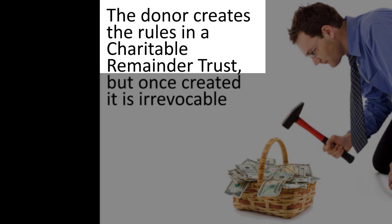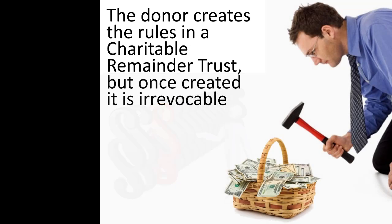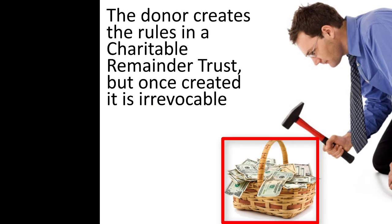The donor creates the rules in a charitable remainder trust, so long as those rules fit within the general guidelines for charitable remainder trusts established by the Internal Revenue Code. This enormous flexibility, however, ends after the trust is created. A charitable remainder trust is an irrevocable trust. Once the rules are created, the rules cannot normally be changed. This irrevocability is what allows the charitable remainder trust to become a charitable entity — it cannot later be made less charitable.